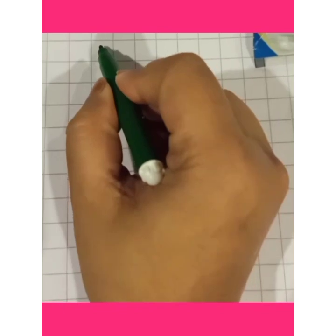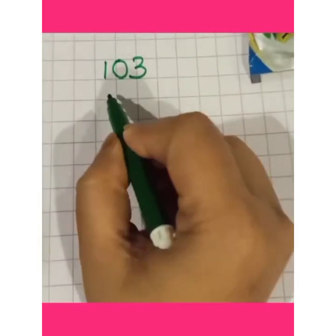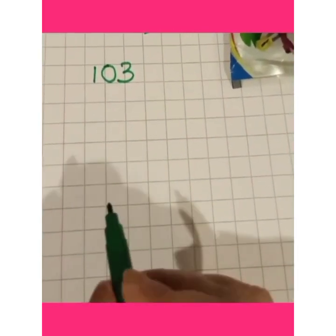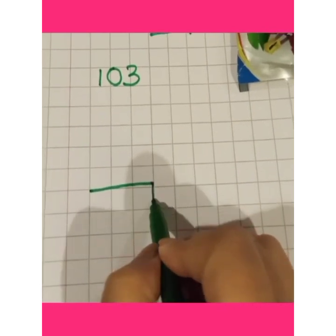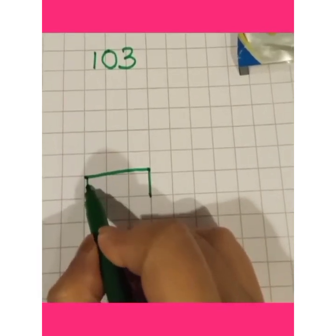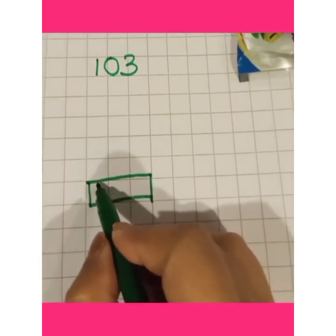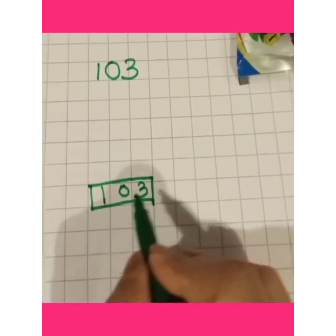Now let us take another example of a number 1, 0, 3. A 3 digit number. So to draw an Abacus, as I told you, first you will make a box. Let us write the number 1, 0, 3.